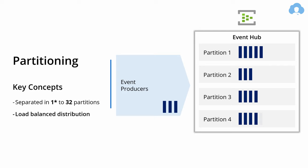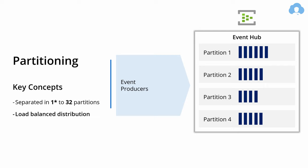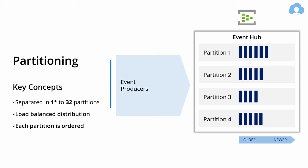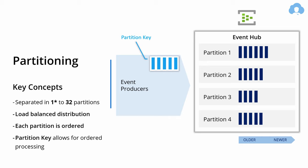When you start sending messages, they will be load balanced across those partitions. There is no guarantee that the partitions will be utilized equally, so you should expect that each partition will grow at a different rate. Within each partition, events are ordered from the oldest to the newest — just like a queue. But you should not expect that the order is maintained across partitions. If you need to process multiple events in order, you need to introduce a partition key, which will ensure they land in the same partition and are therefore processed in order.